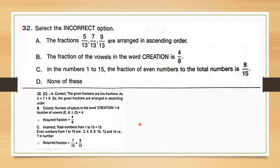Question number 32. Select the incorrect option. Let's check the options one by one. Option A: the fractions are arranged in ascending order. If we look at these fractions, they are like fractions as the denominator is the same in all three. If the numerator is in increasing order, it is ascending order — which is 5, 7, 9, so this statement is correct.